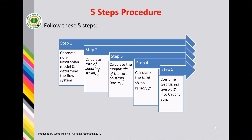This is the five-step procedure. Step one: choose a non-Newtonian model and determine the flow system. Step two: calculate the rate of strain tensor. Step three: calculate the magnitude of the rate of strain tensor. Step four: calculate the total stress tensor. And the final step: combine the total stress tensor into the Cauchy equations.